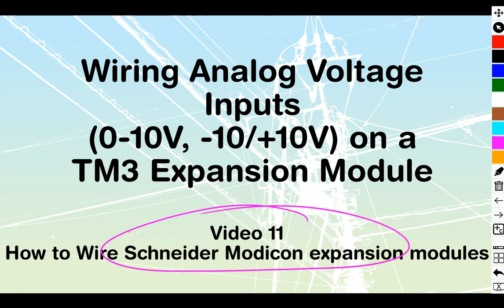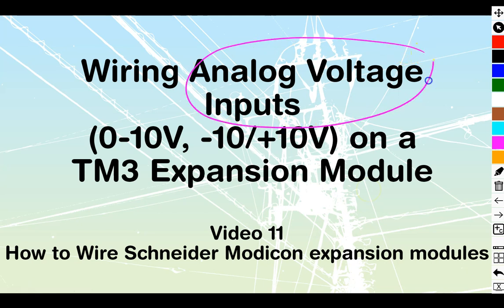This is video number 11 out of the Schneider TM3 series. We're going to be taking a look at wiring analog voltage inputs, 0 to 10 volt or minus 10 through plus 10, on a TM3 expansion module.